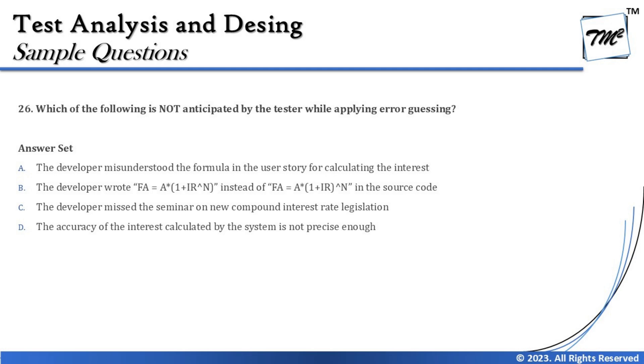Option B describes an equation difference, and this is certainly another example of anticipating a defect. As we noted in equivalence partition and boundary value analysis discussions, developers can go wrong writing equations and operators. So whenever we have equations and operators, we should always look for them as areas where the developer can go wrong.